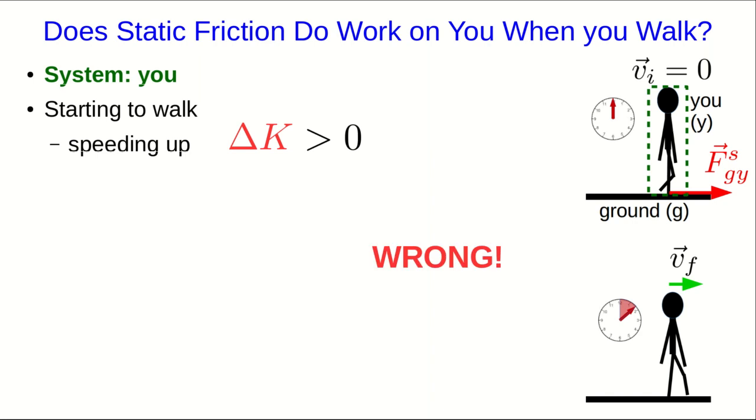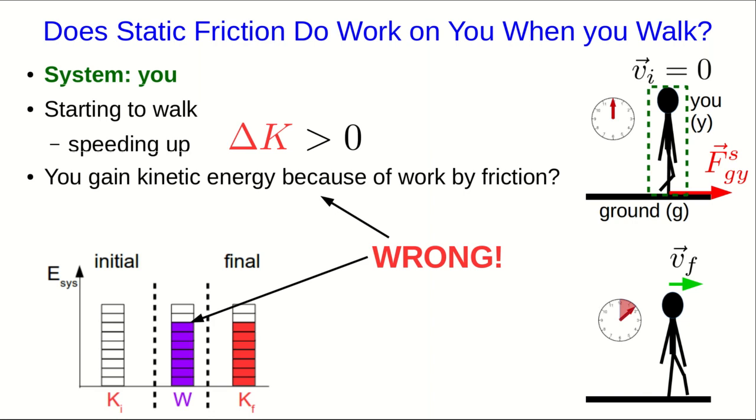I'm going to do some very subtle foreshadowing here. My subtle foreshadowing is that I'm going to tell you something, and it's going to turn out to be wrong. So I'm going to tell you that you gain kinetic energy because of work by friction. But if you think about it carefully, you'll see that that has to be wrong.